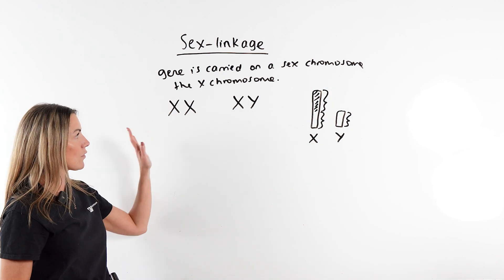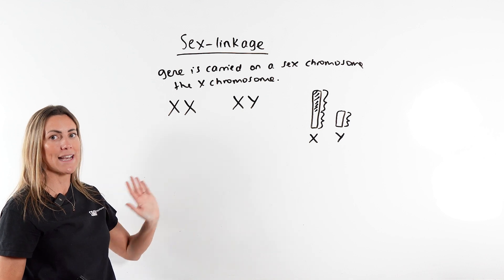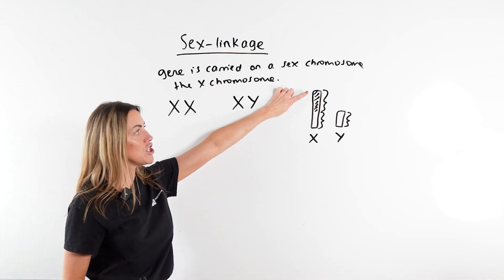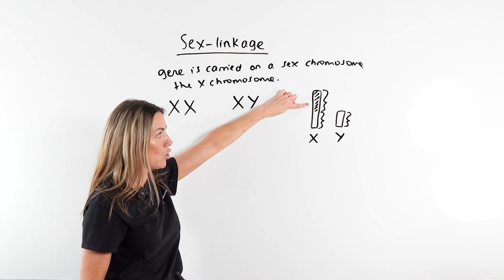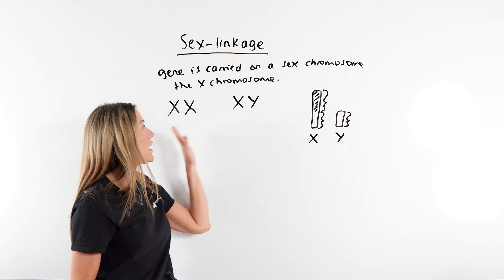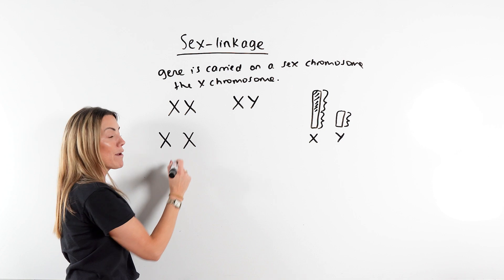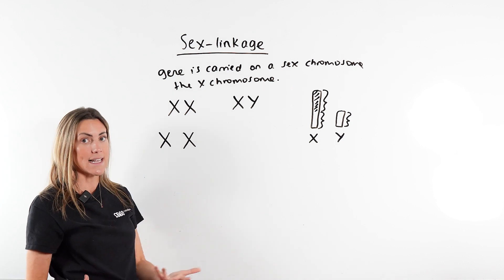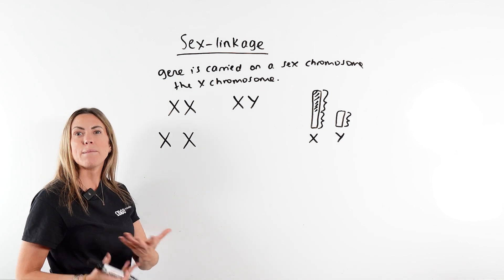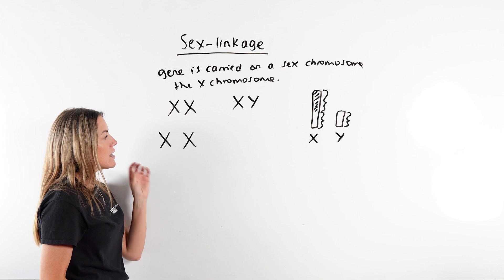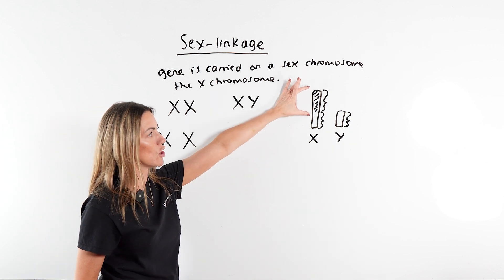Now what does this mean? Well females, because they have two X chromosomes, if there is a gene carried on this portion of the X chromosome, they will have two copies of that gene. So for example, if we think about haemophilia, which is a sex-linked disorder where the blood doesn't clot properly, because they have two X chromosomes, they've got two of these.